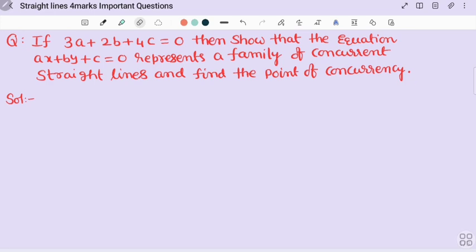Two questions are there. We have to show the given lines are representing a family of concurrent lines, that is one question. And second one, point of concurrency, that means we have to solve the two equations. So let us discuss the solution. First we have to write the given condition.